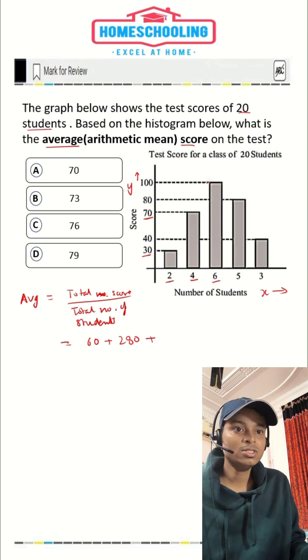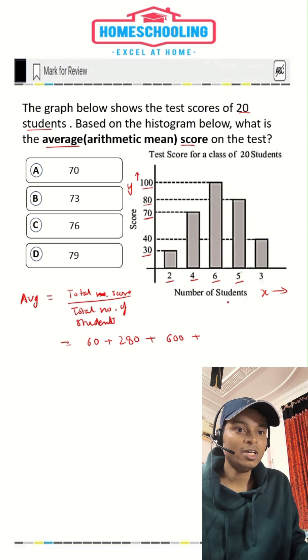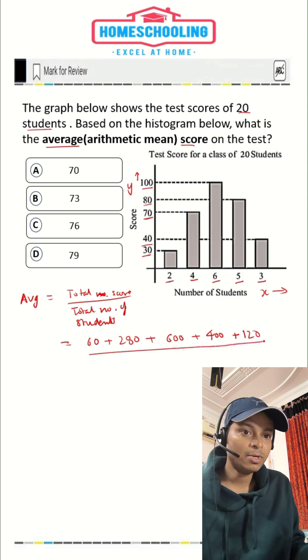Then for these six students, the average score was 100. So their total score would be 6 times 100, that is 600. And for these five students, the score was 80. So 80 times 5, that would be 400. And for these three students, the score was 40. So 3 times 40, that would be 120, divided by total number of students.